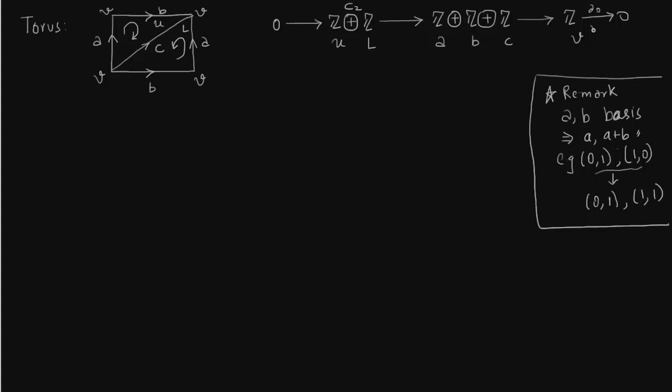So obviously delta_0 has to be multiplied by zero. Anywhere you take a boundary of a single vertex, what you get is zero.